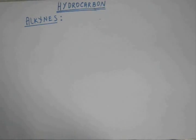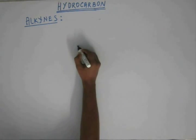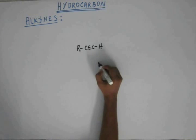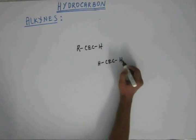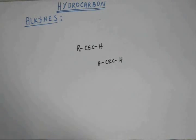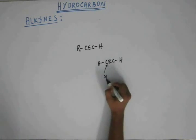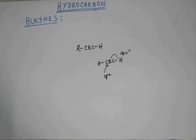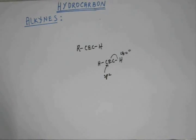Let's start alkynes. Alkynes are hydrocarbons having two pi bonds between two carbon atoms. The smallest alkyne is acetylene. The hybridization of this carbon is sp2, the bond angle is 180 degrees. We won't waste much time on the introduction — let's straight away start studying the methods of preparation of alkynes.